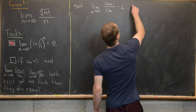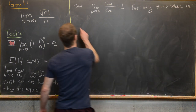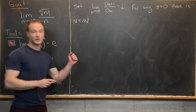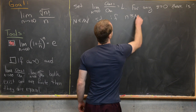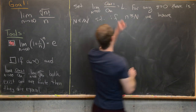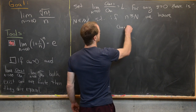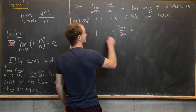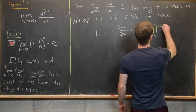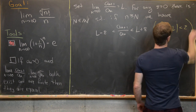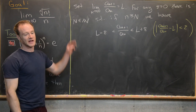By the epsilon-N definition, for any epsilon greater than zero there is some natural number N such that for all little n greater than or equal to capital N, we have a_{n+1} over a_n between l minus epsilon and l plus epsilon. This compound inequality is equivalent to the absolute value of a_{n+1} over a_n minus l being less than epsilon, but the compound form will be more helpful here.